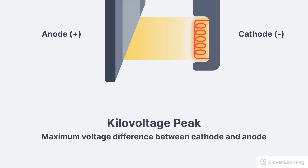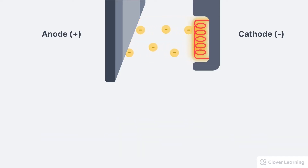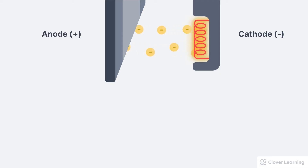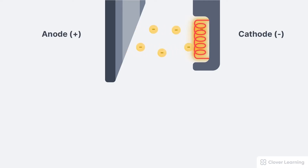The KVP describes the maximum voltage difference between the cathode and anode during the x-ray exposure. This voltage difference is very important because it is what forces the electrons to move across the x-ray tube. The electrons at the cathode are negatively charged and the anode is positively charged, so since opposites attract, the negatively charged electrons are drawn across the x-ray tube and collide with the positively charged anode. Without the kilovoltage applied to the x-ray tube, the electrons would not move and no x-ray production would take place.